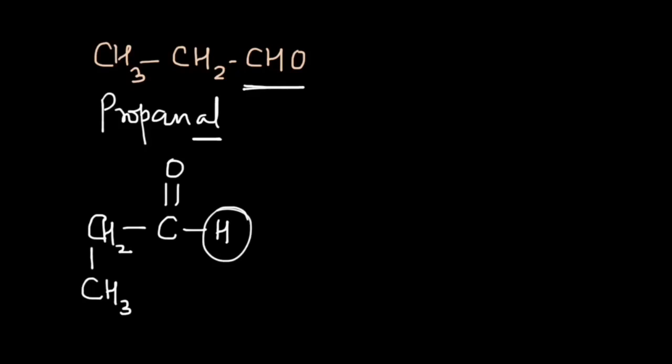functional group as C double bond O and attach carbon atoms to both sides of that group, and we can get this compound which is called acetone or propanone.